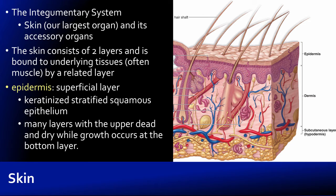It's good to recognize that the skin is our largest organ — it obviously covers our entire body. Interestingly, the liver is our biggest internal organ, but it's not going to be as big and heavy as this big wrapper on the outside of us. The skin only has two layers, but we also want to talk about a related layer that binds the skin to underlying structures. We'll begin with the most superficial or outer layer, what we call the epidermis.